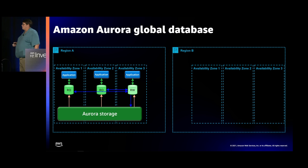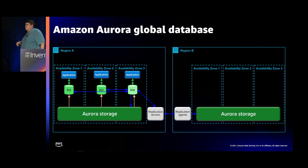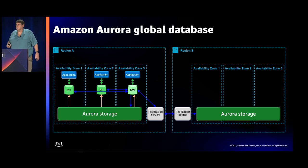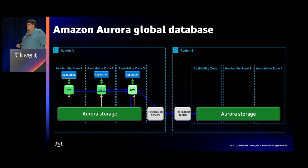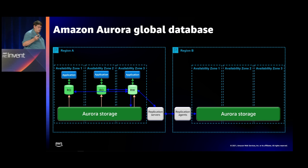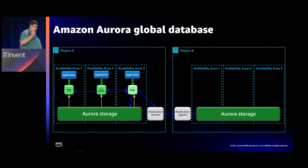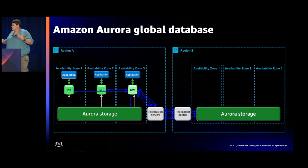Global Database is our feature designed for disaster recovery. It takes a copy of Aurora storage and puts it in a different region — say Oregon as the primary and Virginia as the secondary. Your read-write connection is in Oregon; all writes happen there. You go into the console or CLI, say you want global database in Virginia, and we set up a copy of the cluster with Aurora storage. We provision replication servers, copy all the data across, and make a synchronous copy on the Amazon backbone.